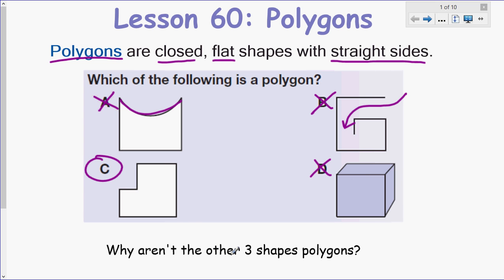So why aren't the other three shapes polygons? We talked about it just now. Maybe you can jot down right next to the shapes all the reasons why not. So this one was curved, this one was open, and this one was 3D, wasn't flat.